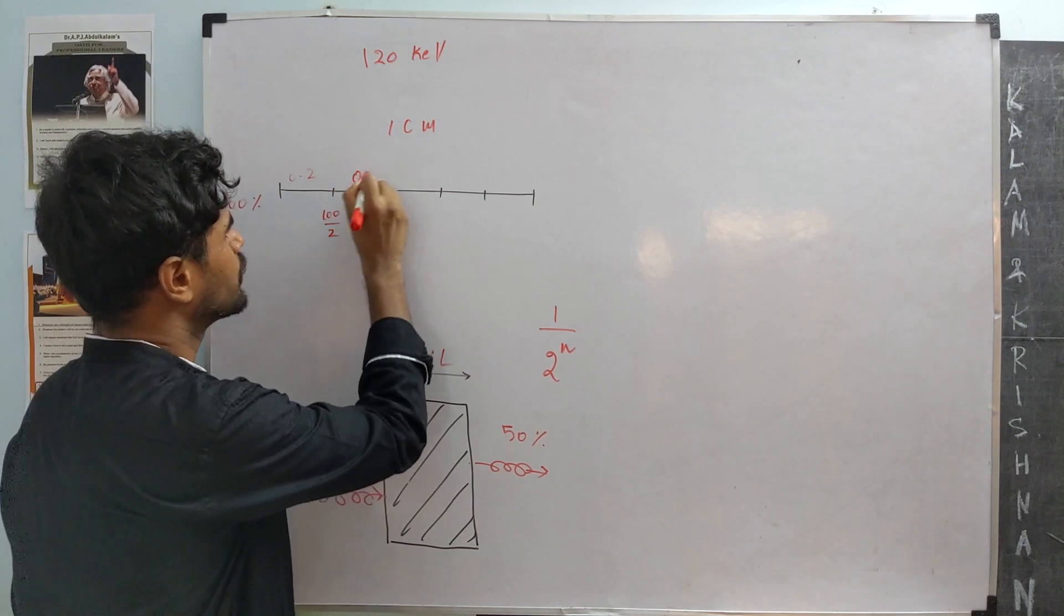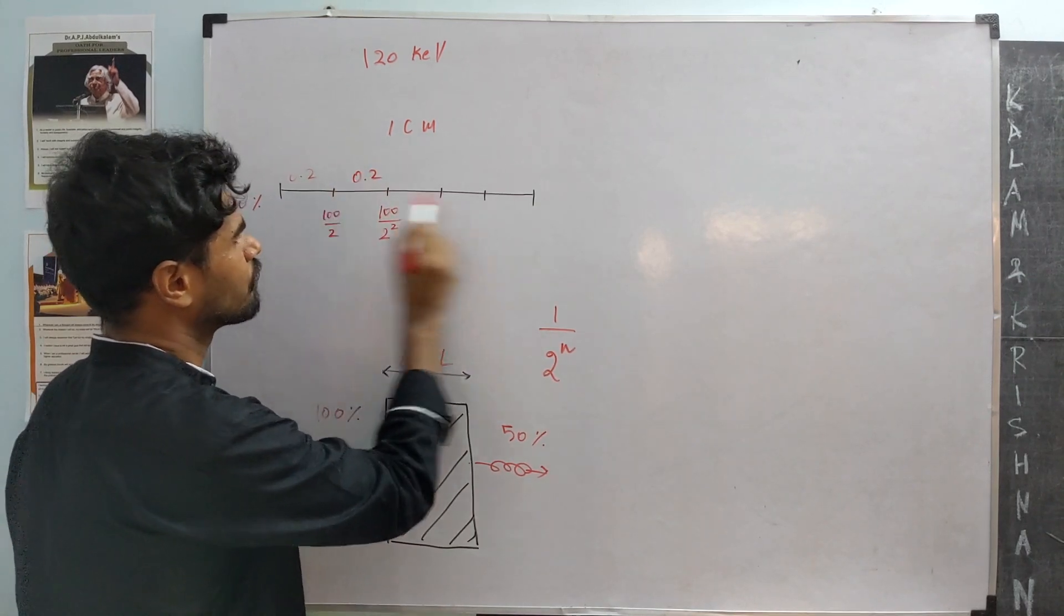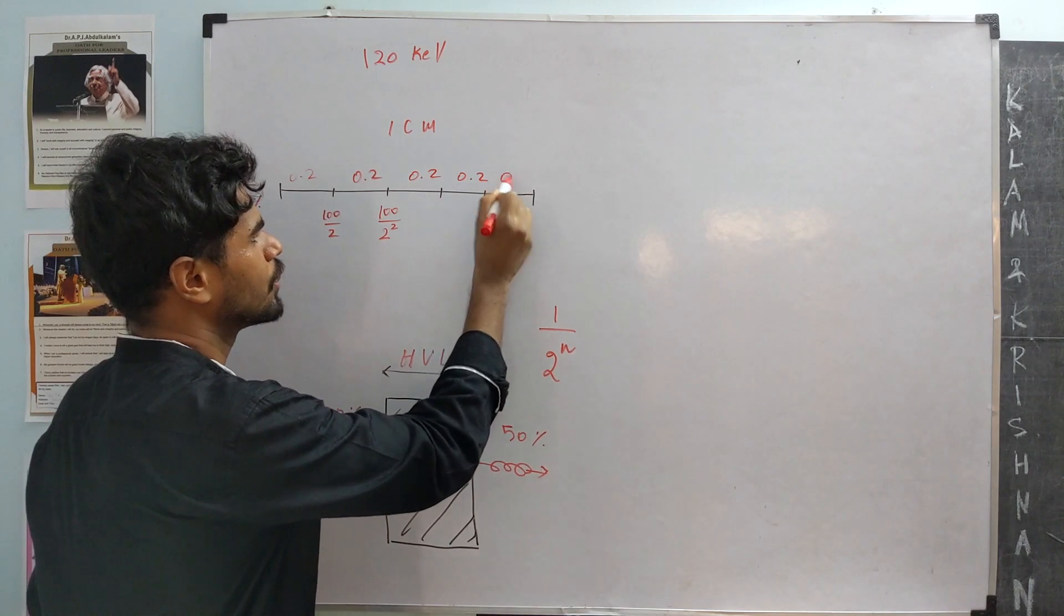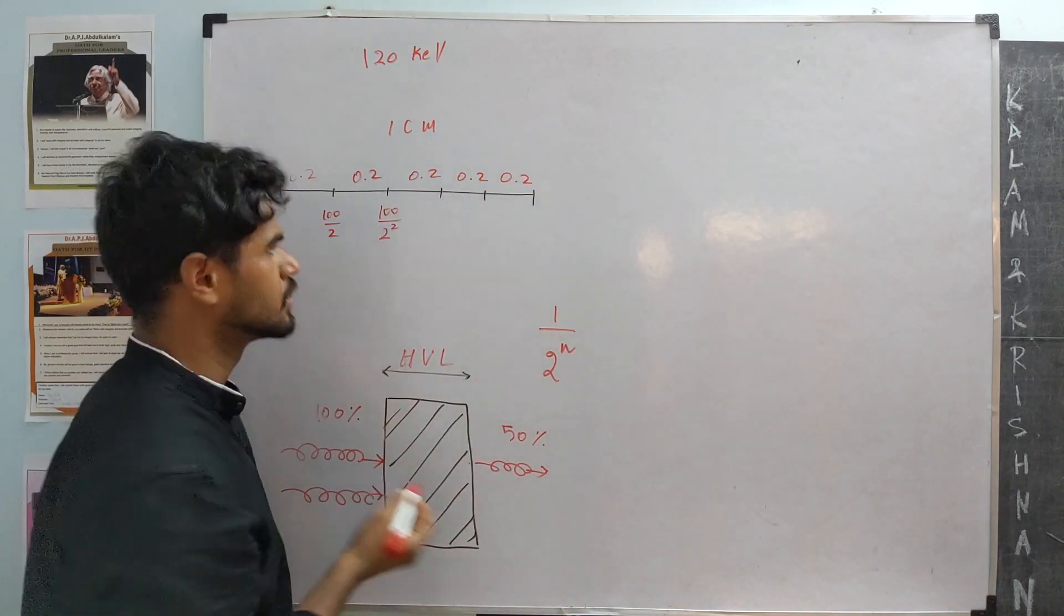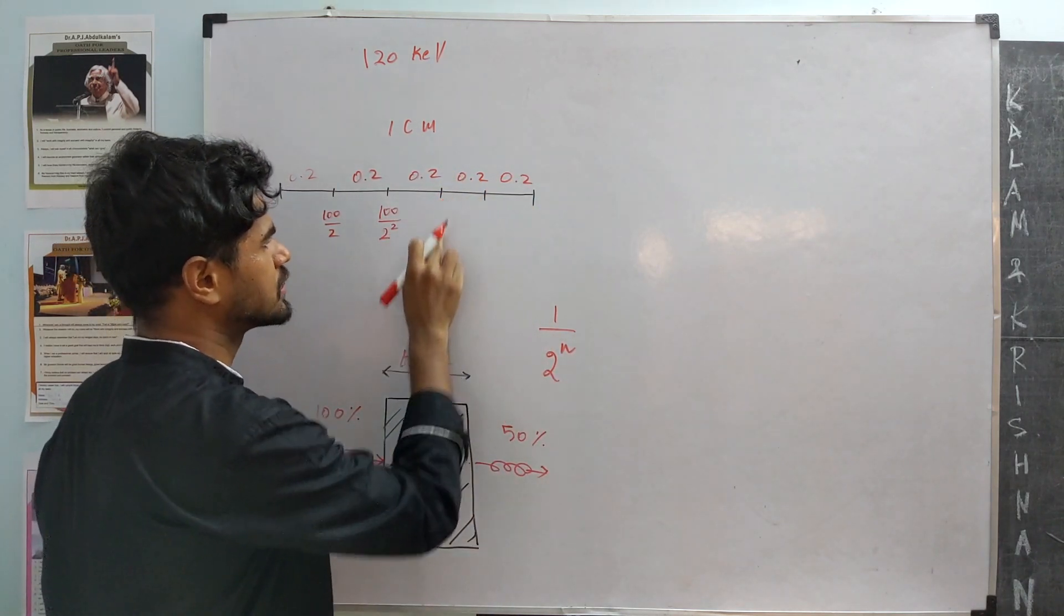So, this is 0.2 and then we have like 5 half-layers here, 0.2, 0.2, 0.2, that makes 1 centimeter. So, by the time it comes to 0.6 centimeters, we are left with 100 by half of this,